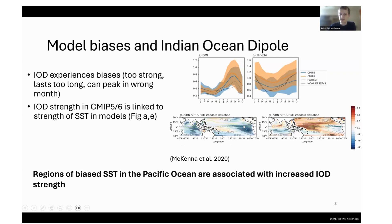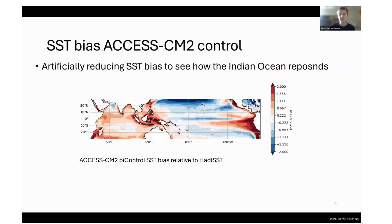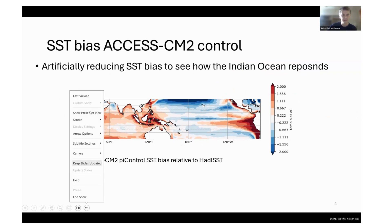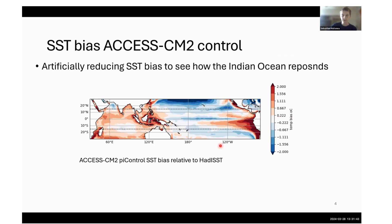What these plots are saying is that these regions of biased SST in the Pacific — CM5 on the left and CM6 on the right — are associated with increased IOD strength in CM5 models. This is what the bias in ACCESS CM2 looks like. We've got this equatorial cold bias, this warm bias in the East Pacific, and then warm bias over the Maritime Continent.